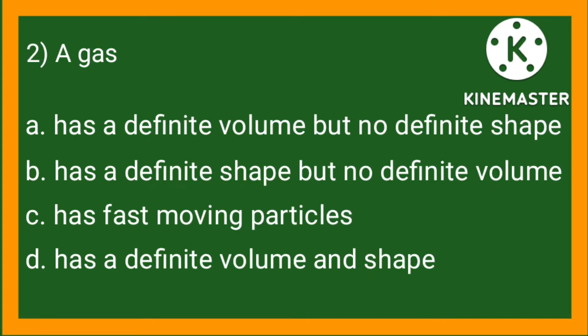Statement number two: A gas — Option A: has a definite volume but no definite shape. Option B: has a definite shape but no definite volume. Option C: has fast-moving particles. Option D: has a definite volume and shape.